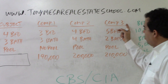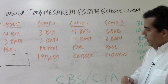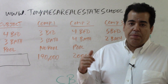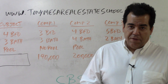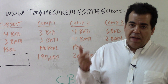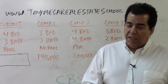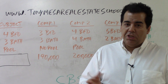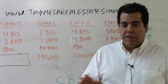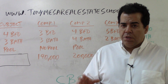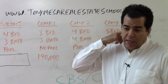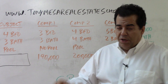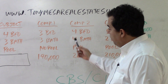We use comparable number one, comparable number two, and comparable number three. These comparable sales have to be fairly recent, because market value changes over time. They have to be substantially similar to the subject — if the subject is a two-bedroom, you can't use a ten-bedroom as a comp. The appraiser tries to find properties substantially similar to the subject and in the same geographic area.